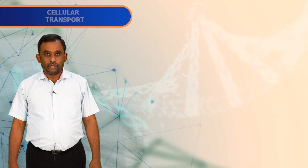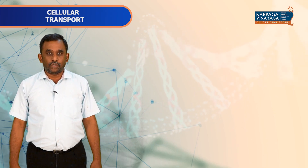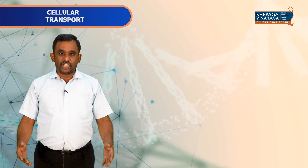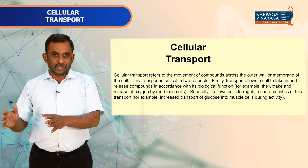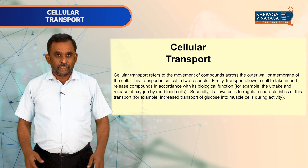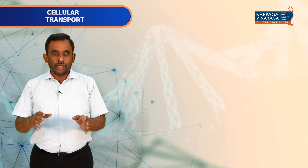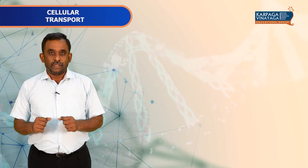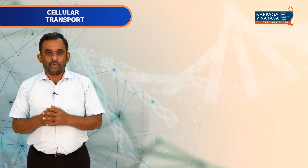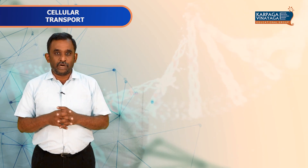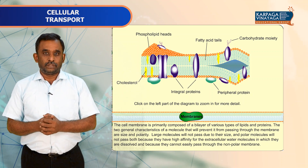Let's look at cellular transport. Cellular transport is the movement of molecules across the cell membrane. In general, it involves two processes: the first is movement of a molecule across the cell membrane based on biological properties, and the second is movement of a molecule across the cell membrane based on the transporter.